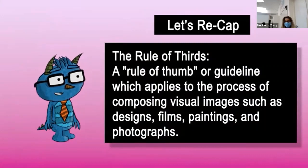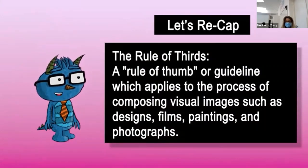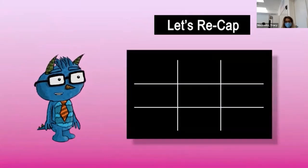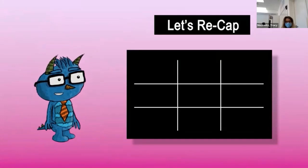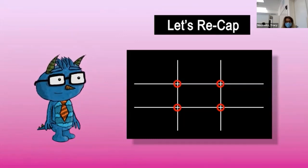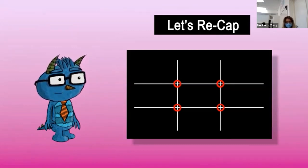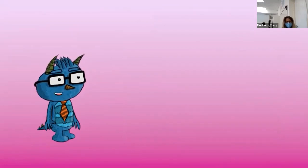The rule of thirds is really nothing more than an imaginary grid that we can visualize over top of our composition. Most phones and cameras have the option for you to have a visible grid on your screen. It looks just like a tic-tac-toe board with two evenly spaced horizontal lines and two evenly spaced vertical lines that create four intersections. These intersections are called our points of interest and are the areas of the composition where our eyes are naturally drawn. We can use this grid to help plan our frame so that it is making the strongest compositional statement possible.